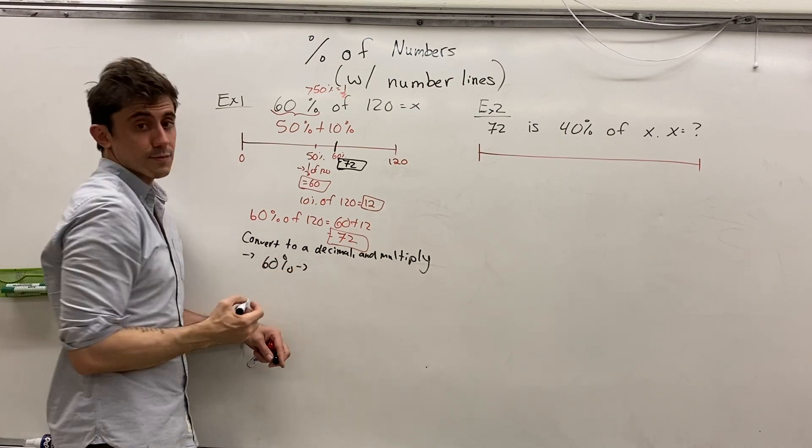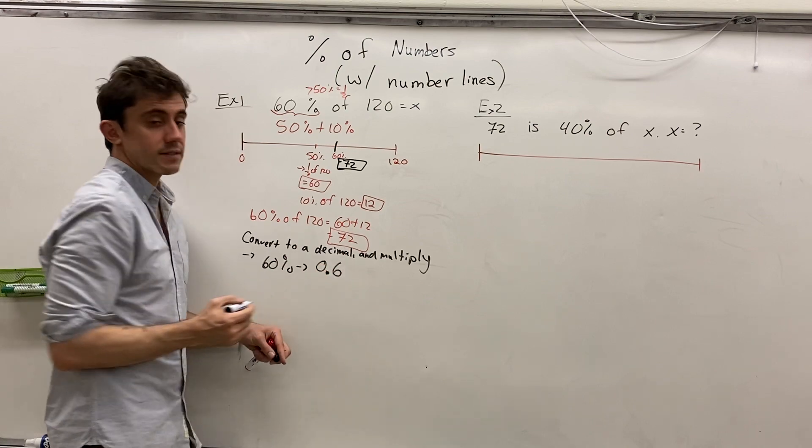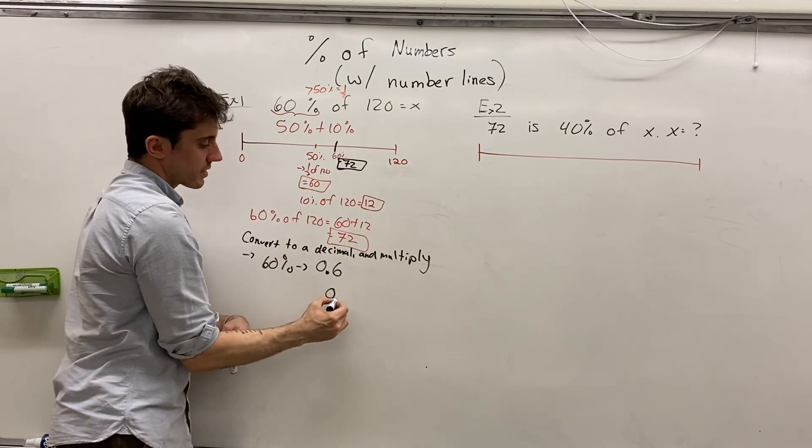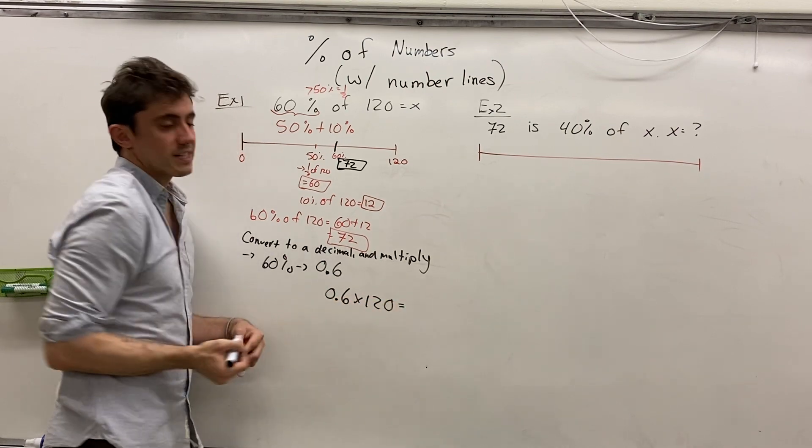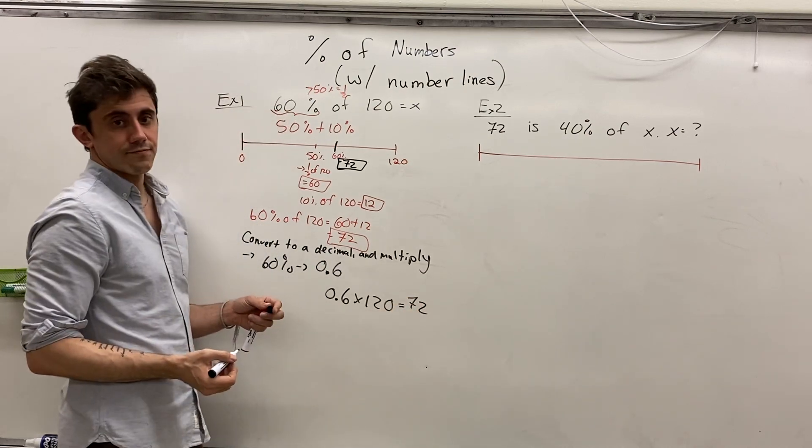And so then if you multiply it by 120, you can then use a calculator to get this value rather quickly, and you'll again get 72.